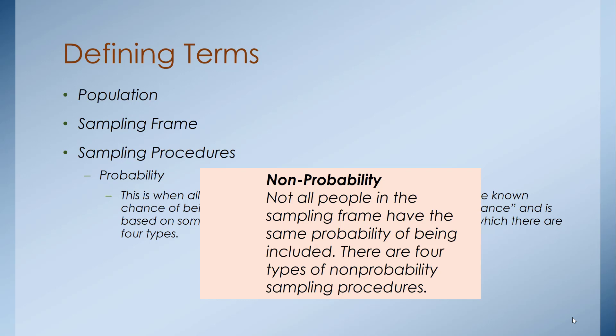Non-probability sampling is when not all people in the sampling frame have the same probability of being included. There are four types of non-probability sampling procedures. Probability sampling increases the ability to have external validity — to take results and apply them beyond just the sample population to the entire population. Non-probability sampling prevents that; any findings can only be linked back to the people in your sample.